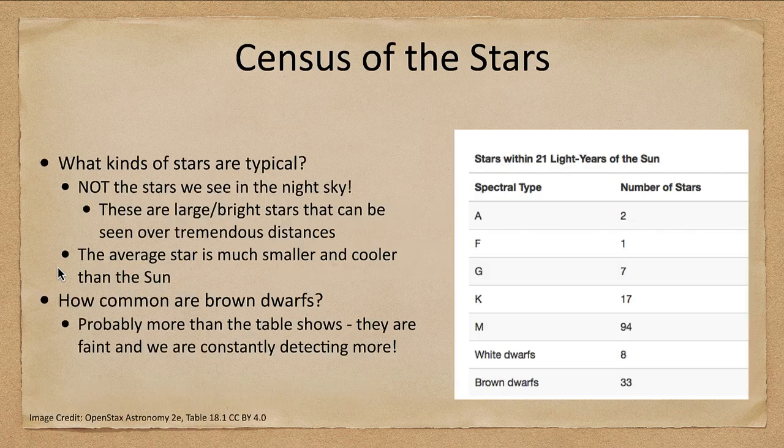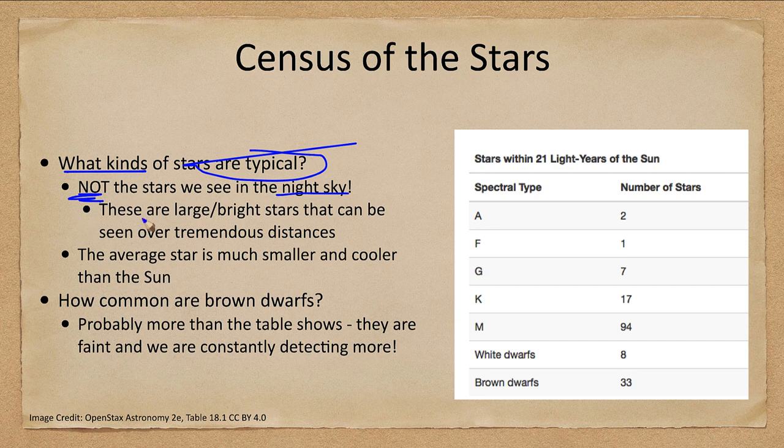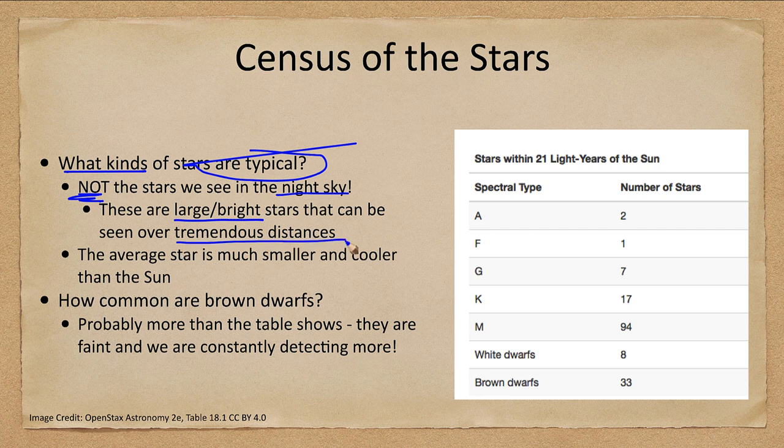So let's take a census of the stars and see what kind of stars are typical. Well, the typical stars are not the stars that we see in the night sky. The stars that we see in the night sky are large and bright stars that can be seen over very large distances.